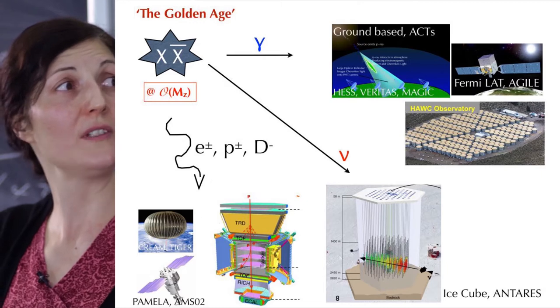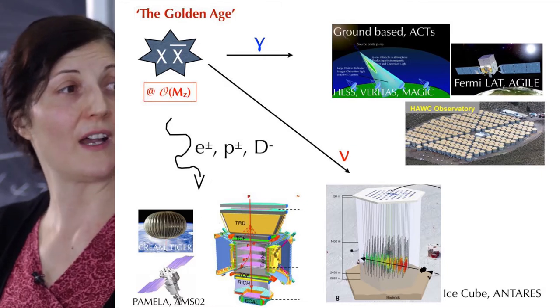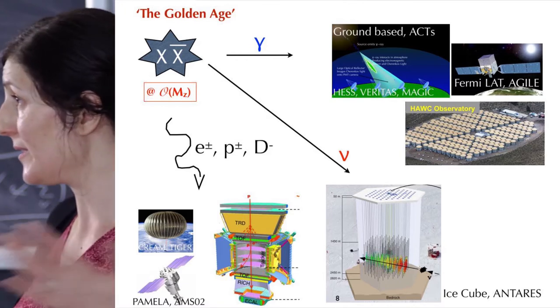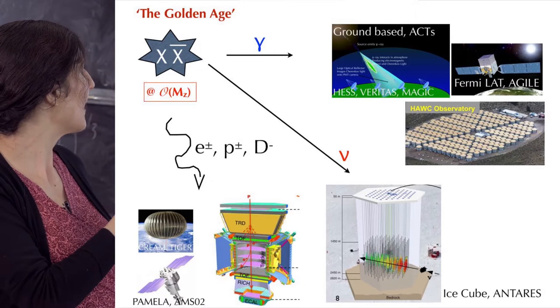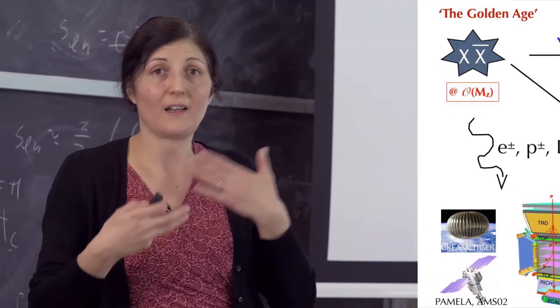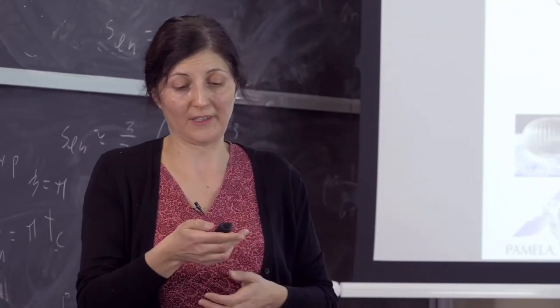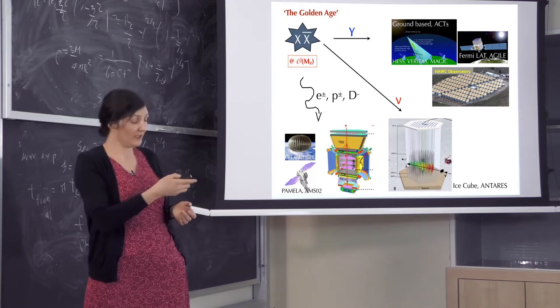Similar situation is with neutrinos. If two dark matter particles annihilate producing neutrinos, we now have IceCube and Antares experiments that actually do look for this signature. Similar story for charged particles. We have AMS, PAMELA, that could look for extra electrons or protons in the cosmic ray data. What I will focus on now is the search in gamma rays.